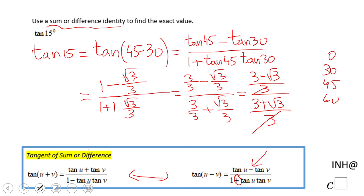The threes cancel out, and the final answer for this problem is 3 minus square root of 3, all over 3 plus square root of 3.